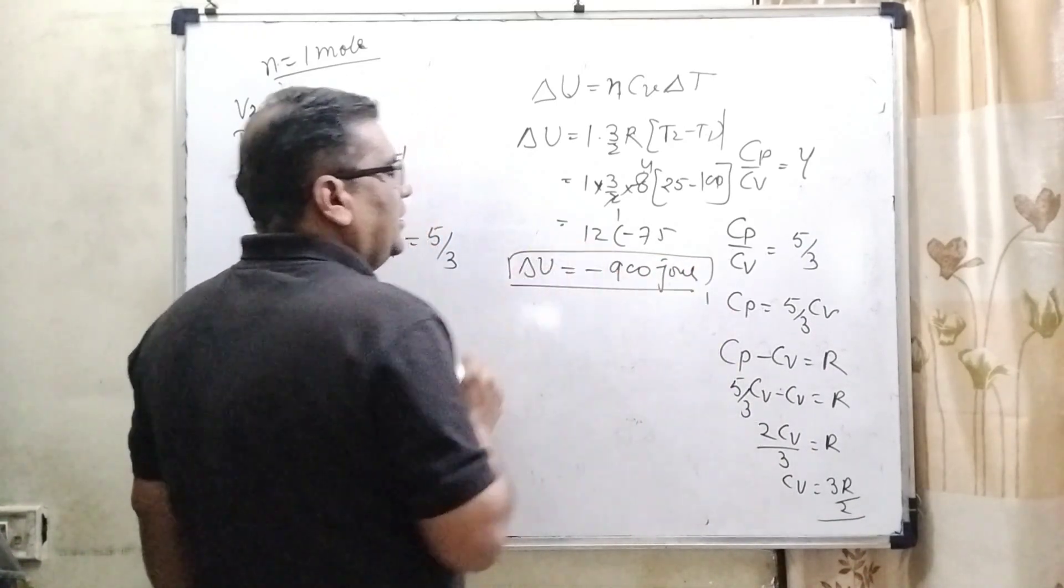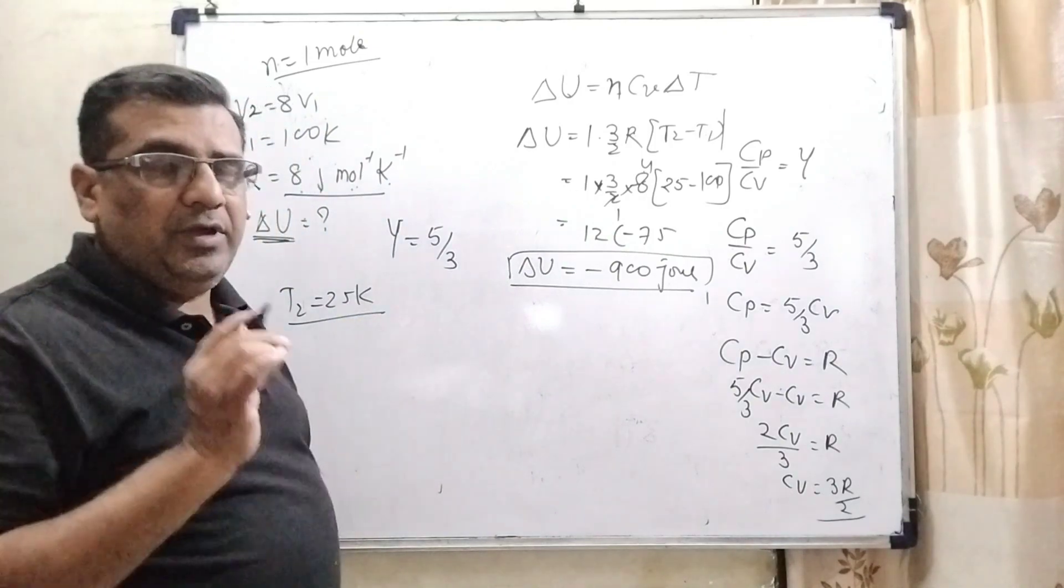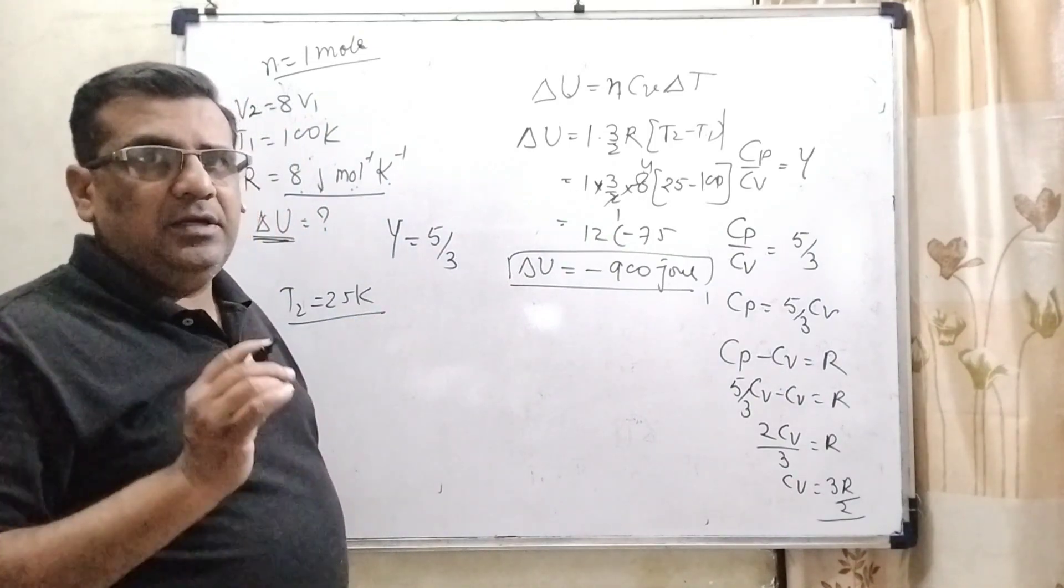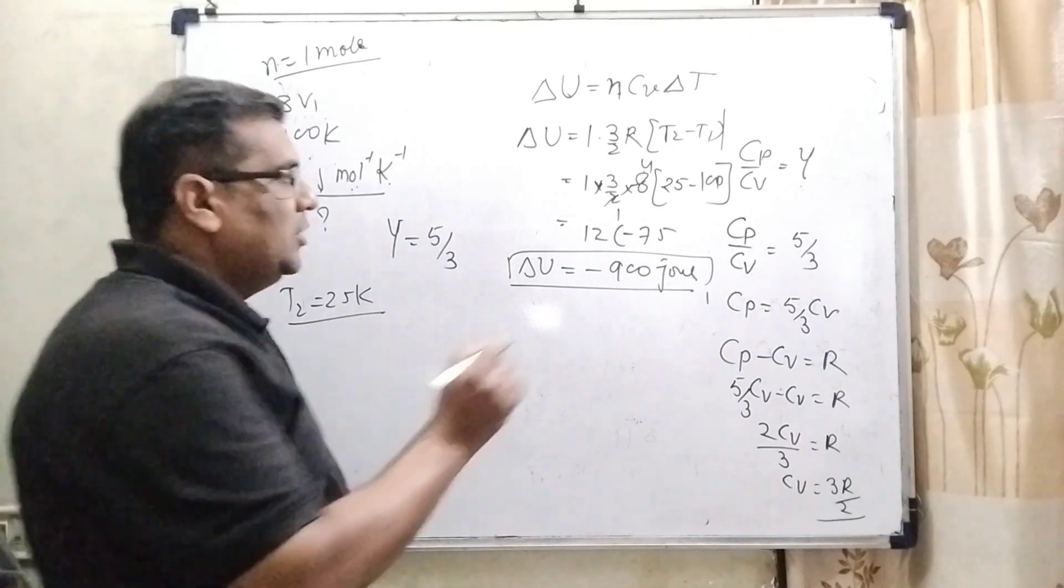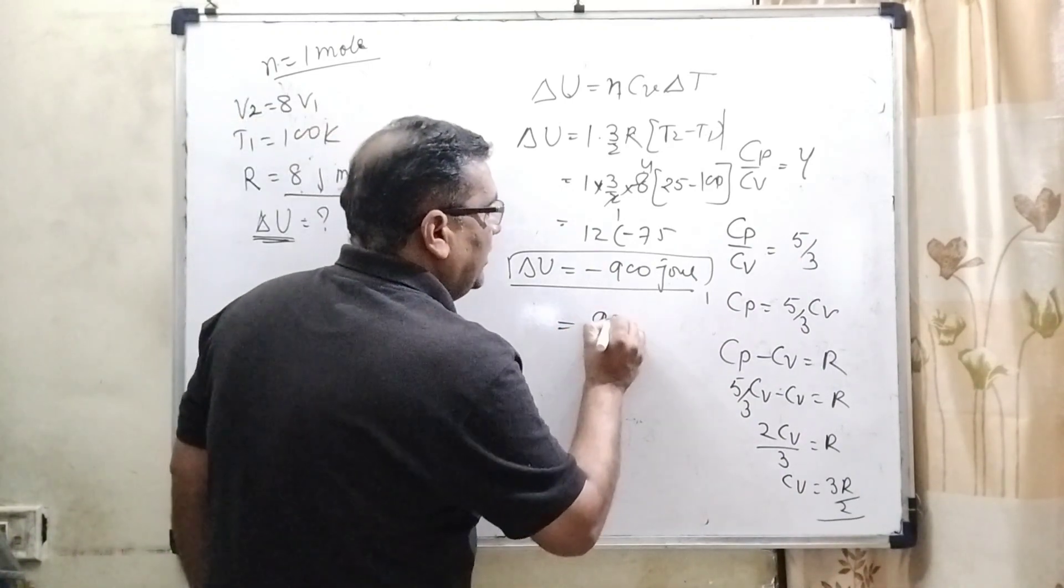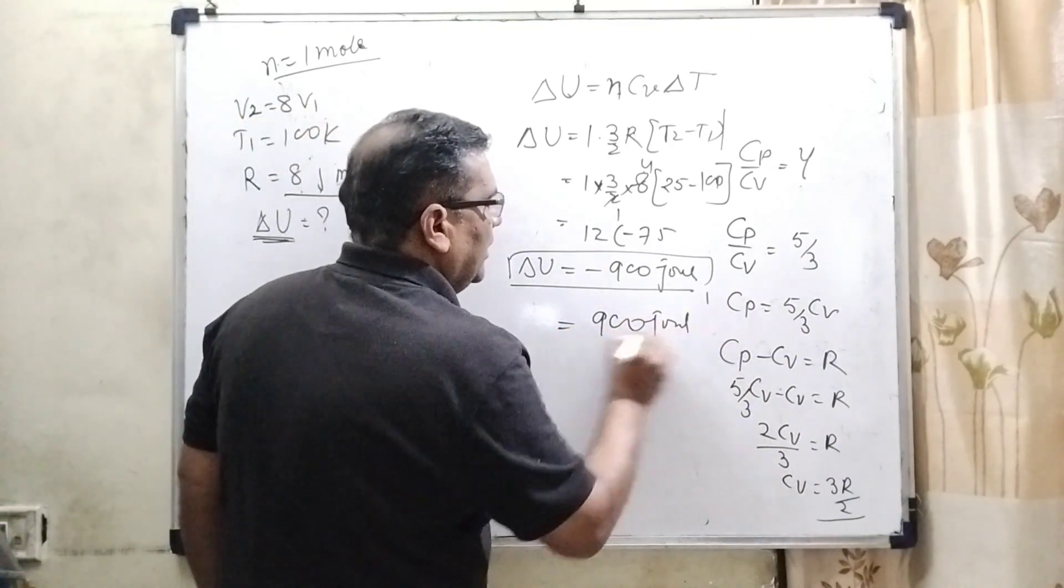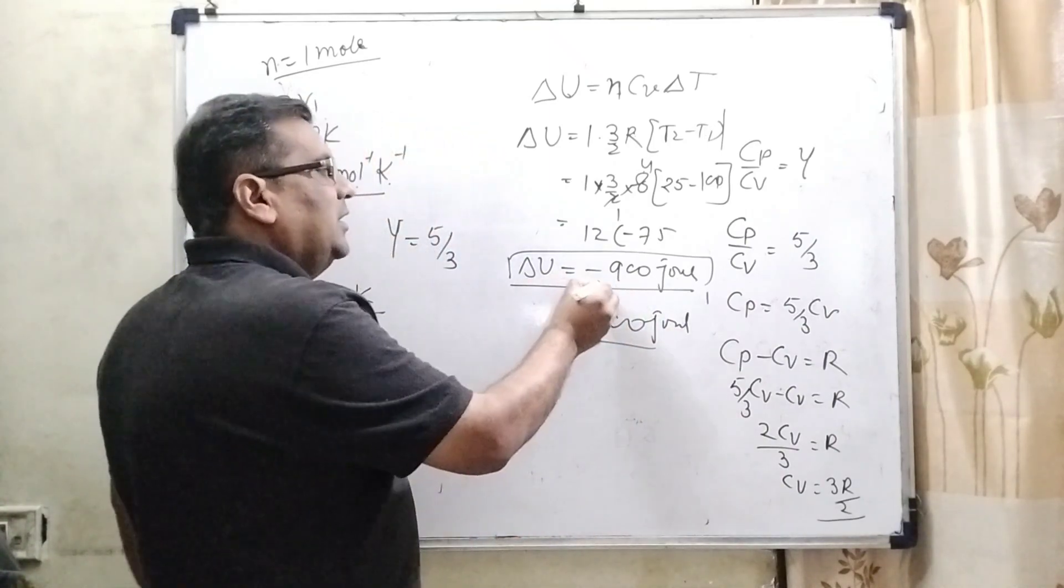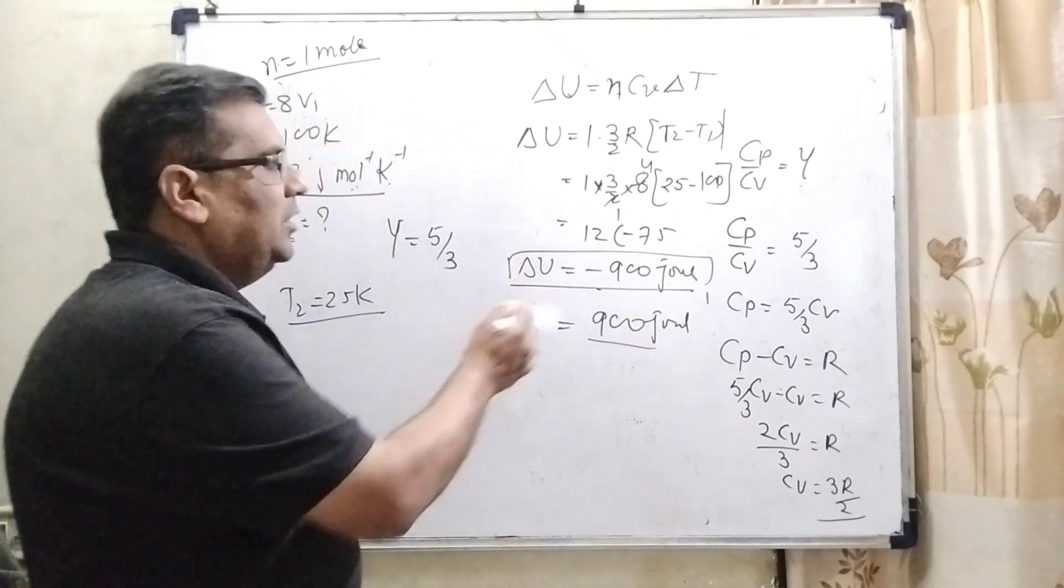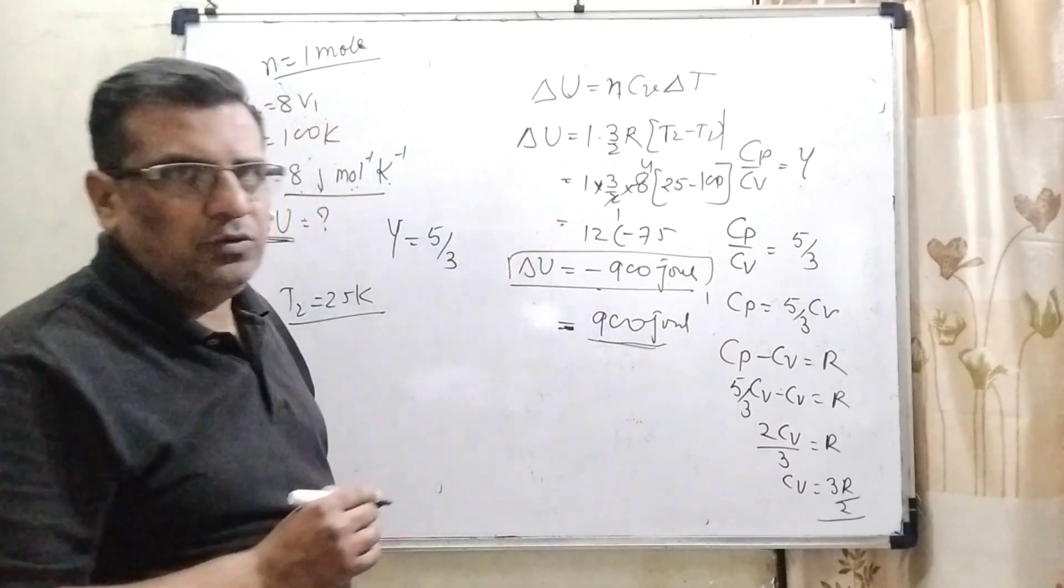Here minus indicates decrease. But in the question, here very important thing is given that what is the decrease of internal energy? So our answer should be 900 joule. Not minus because it is given in the question decrease. So therefore, we have put here 900 joule.